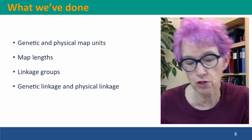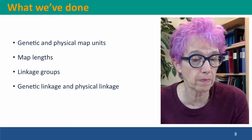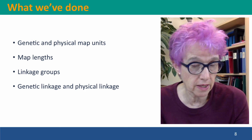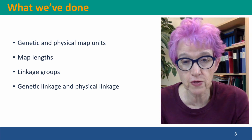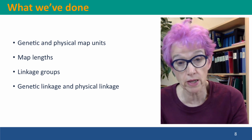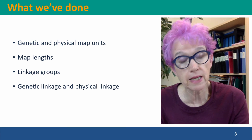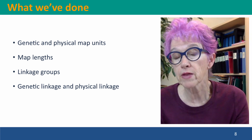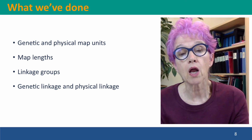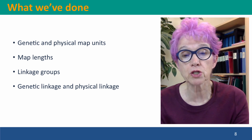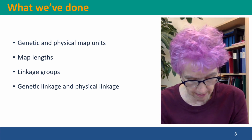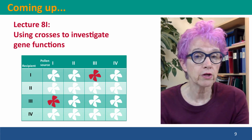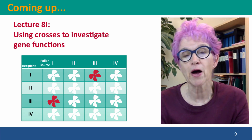So we've talked about genetic and physical map units, map lengths, the concept of linkage groups, and about genetic linkage versus physical linkage — how not all physically linked genes will behave as if they are directly genetically linked, but they will be indirectly linked into a linkage group because they show genetic linkage to loci closer to them. Coming up next, lecture 8I, we're going to change gears and start using crosses to investigate gene functions. I hope to see you there.